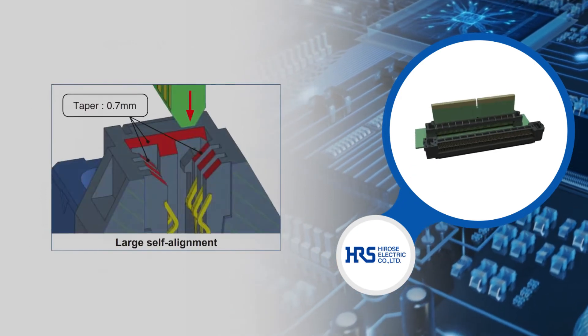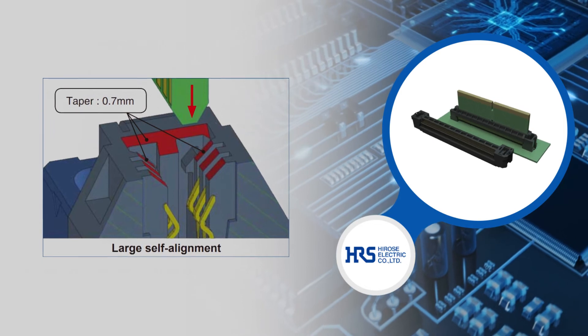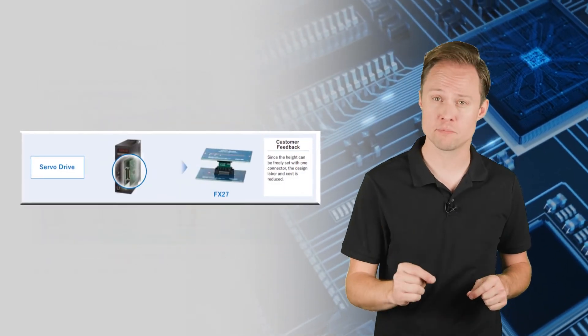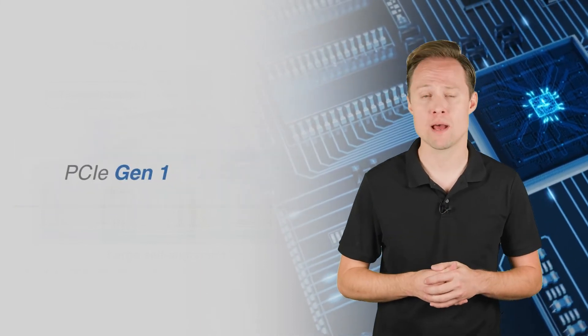A large guidepost with a 0.7mm taper allows for a straightforward mate with excellent electrical performance. Copper alloy contacts with gold plating support high-speed transmissions of 2.5 gigabits per second found in PCIe Gen 1 applications.